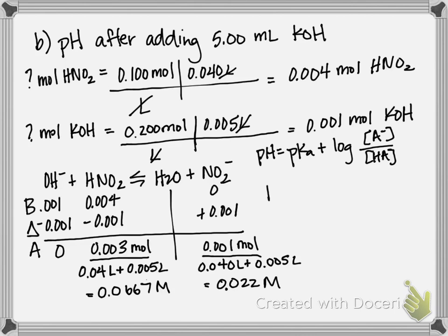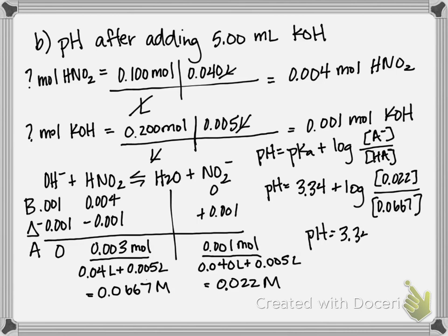So for our calculation, pH equals 3.34 plus log of our A minus concentration, which in this case is our NO2 minus, so 0.022, and on bottom is our acid concentration, which in this case is the nitrous acid concentration, which is 0.0667. So if we take that and do the log, you get negative 0.48, and if you take that, subtract it from the pKa, we get that the pH is equal to 2.86, and that's the pH for part B of this question.